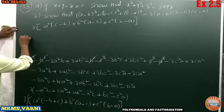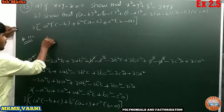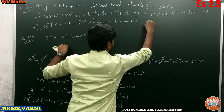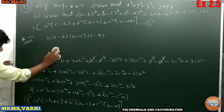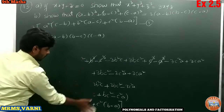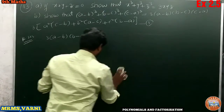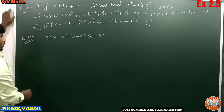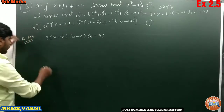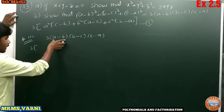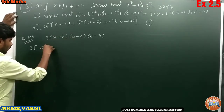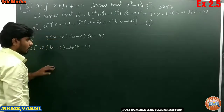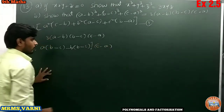Now I am taking the RHS: 3 into a minus b, into b minus c, into c minus a. Consider this equation 1. I am now expanding this — multiplying the three products. Writing 3 outside, multiply a minus b with b minus c: a into b minus c gives ab minus ac, minus b into b minus c gives minus b squared plus bc. And then multiply by c minus a.